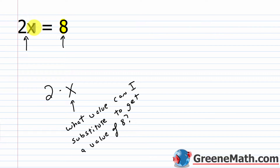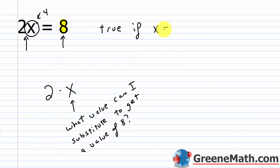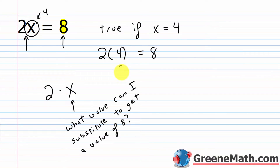Almost all of you know that number is 4. So if I replace x with 4, I get a true statement — the left and the right side would both be 8. This is true if x equals 4. You check it by plugging in: 2 times 4 should be equal to 8, and of course it is — 8 equals 8. You're just looking for the same value on both sides, and 8 and 8 checks out.